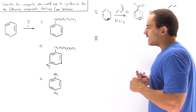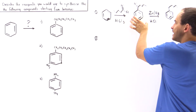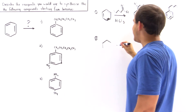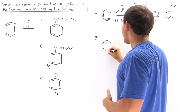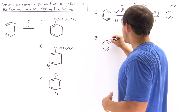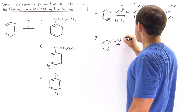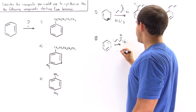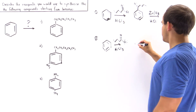Let's begin with the same first step as in process number one. We want to produce the ketone intermediate first, because we need a group that directs meta-substitution and not ortho/para. So the first step is the same: we take our acetyl chloride, mix it with aluminum chloride, and produce our ketone intermediate.